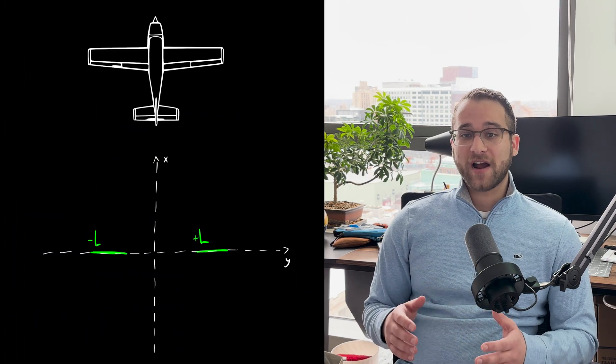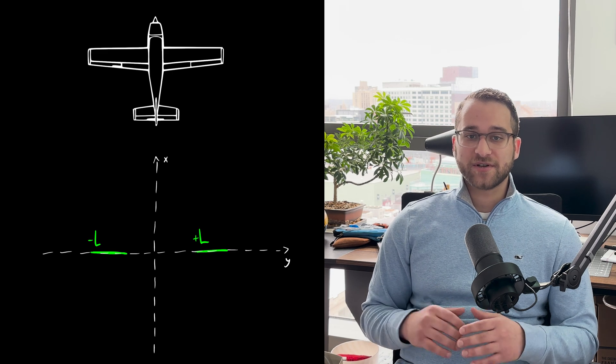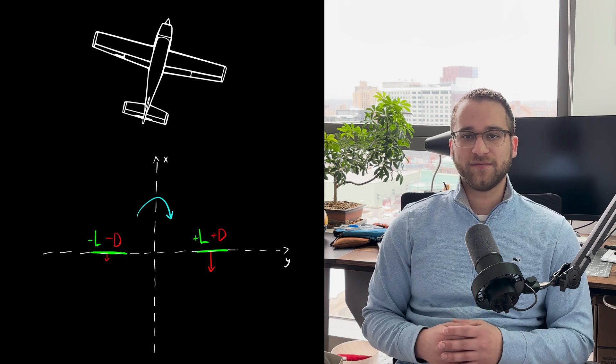And here's something else interesting. Roll and yaw are actually coupled. When an aircraft rolls, it often yaws in the opposite direction, known as adverse yaw. When an aircraft rolls, the ailerons deflect in opposite directions to create lift. But this lift is not even. As you may remember from my last video, with more lift comes more drag. The wing generating more lift is pulled backwards, causing the plane to yaw away from the direction of movement.